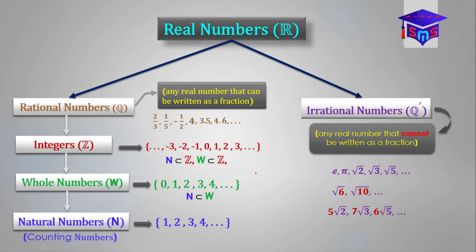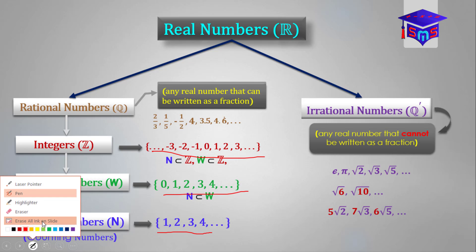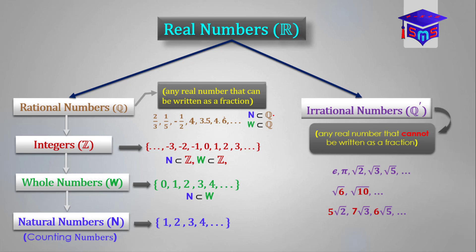As we said earlier, the set of natural numbers, the set of whole numbers, and the set of integers can all be expressed as fractions, so they are all rational numbers. Therefore, the set of natural numbers is a subset of the set of rational numbers, the set of whole numbers is also a subset of the set of rational numbers, and the set of integers is also a subset of the set of rational numbers.